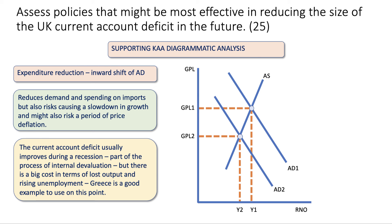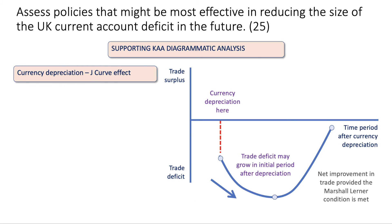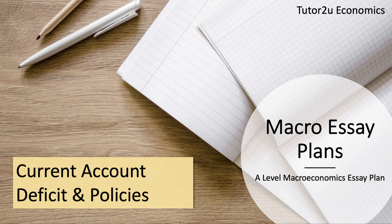The J-curve nearly always makes an appearance in a trade deficit question. A fall in the currency may initially make the trade deficit worse when the elasticities of demand are low for imports and exports. Hopefully, if the Marshall-Lerner condition is met, the trade improvement will follow — but it's highly unlikely that currency depreciation alone will take you from a current account deficit of over 4% of GDP into surplus. You need to be aware of the context in which the question is set. Hopefully you found this essay plan on the current account a useful exercise — thank you.